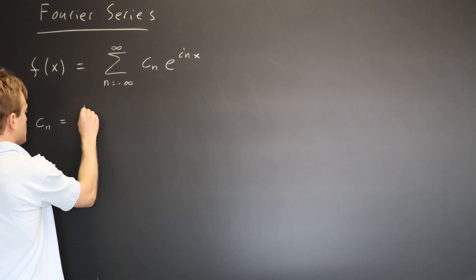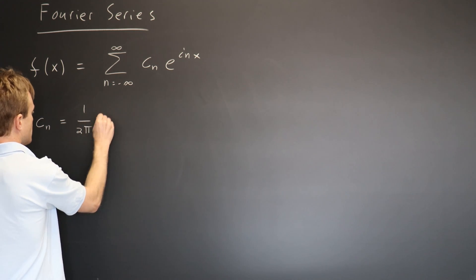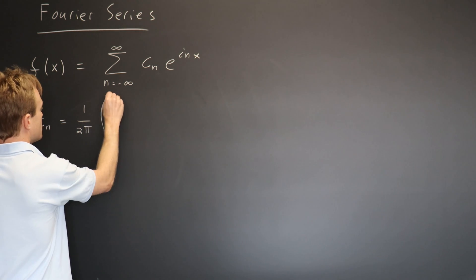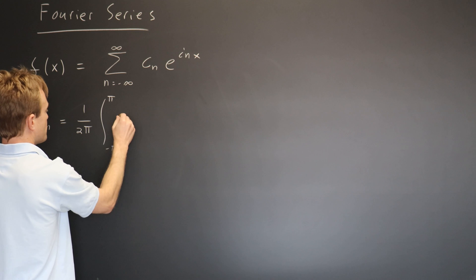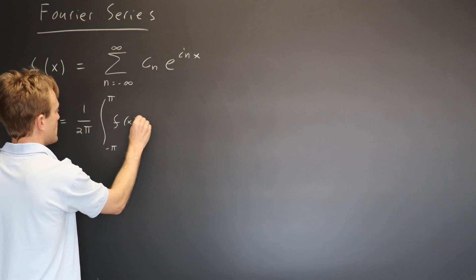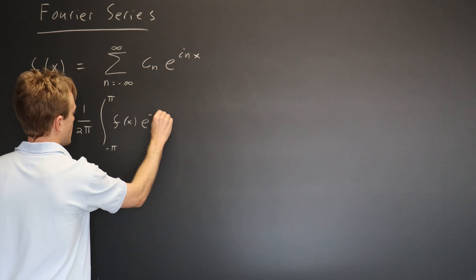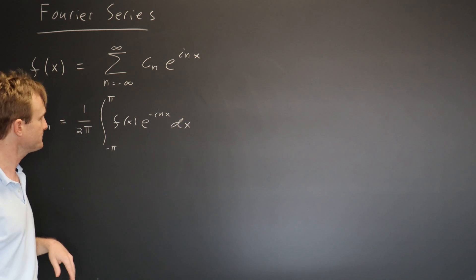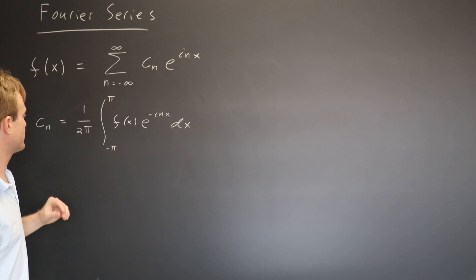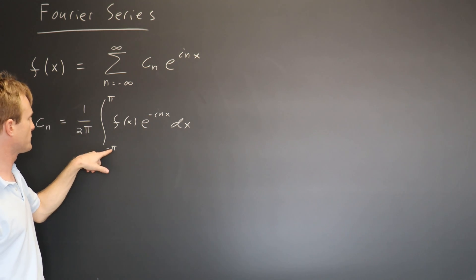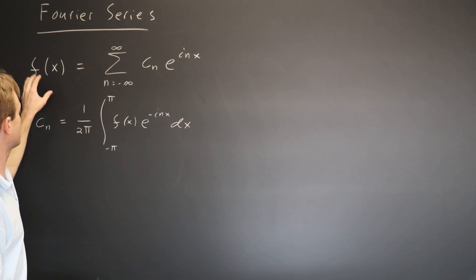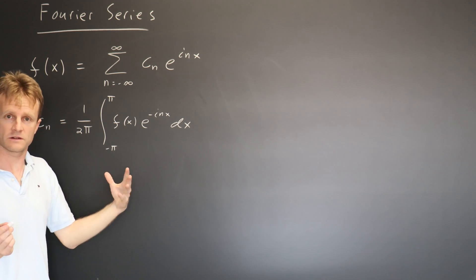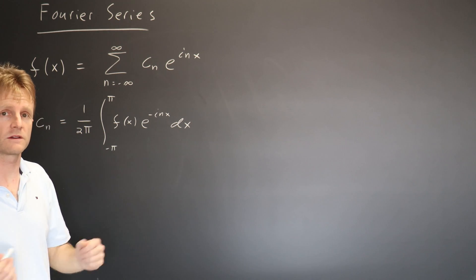which said that the way you get it is you integrate from minus pi to pi the function you're talking about, e to the minus i nx dx. Now, one thing I didn't mention previously is we've assumed this interval minus pi to pi, so this function is either only defined on that interval or it's a 2 pi periodic function.